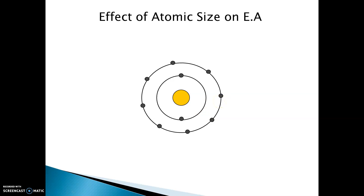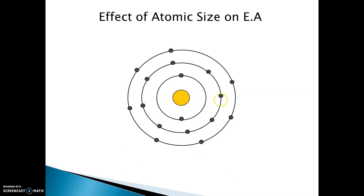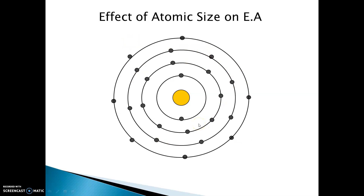This is the structure of a chlorine atom having seven electrons in its valence shell. It also has one electron less to complete its octet and accepts an electron and becomes chloride ion. Similarly, for bromine atom, again one electron is less so it will accept one electron to complete its octet.